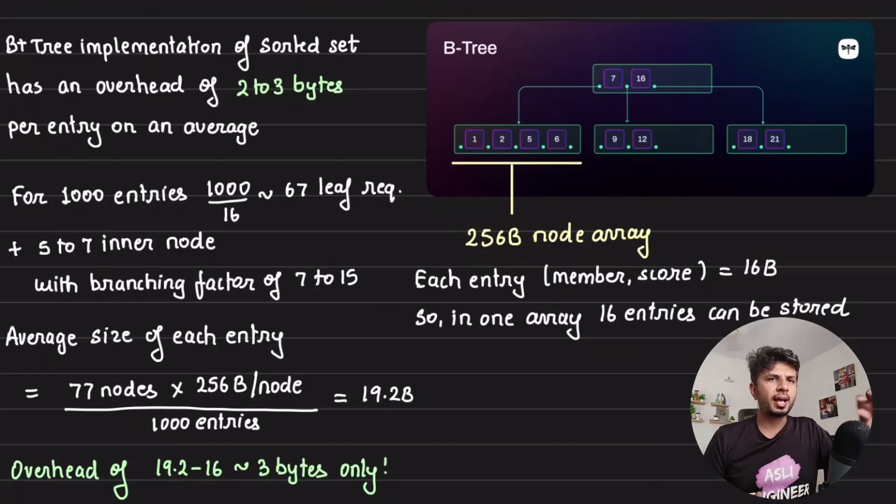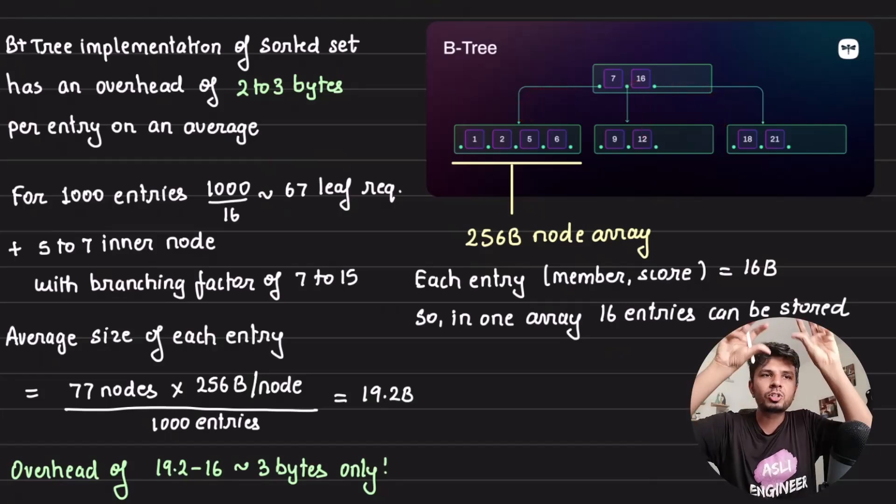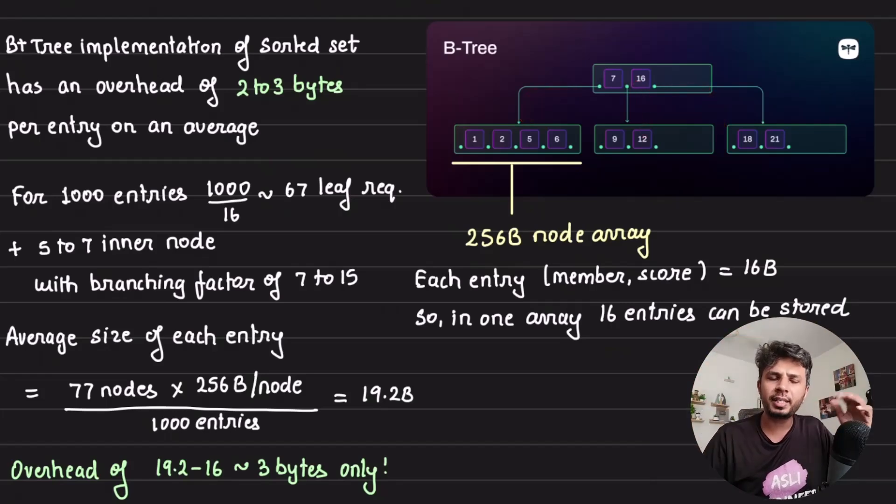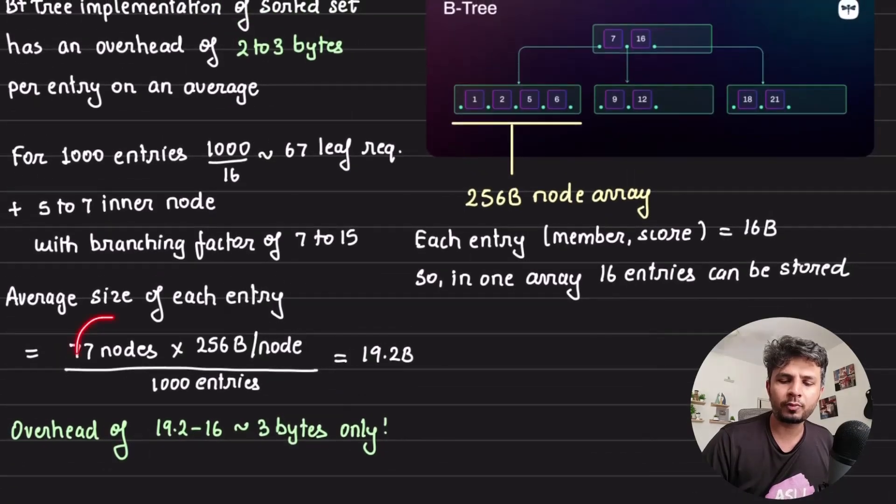Assume I have 1000 entries. How many leaf nodes will be required? 1000 entries divided by 16 entries per node, so roughly 67 leaf nodes. If I need 67 leaf nodes and assume a branching factor of 7 to 15, how many inner nodes will be required? Roughly 10. So roughly 77 would be the total number of nodes required.